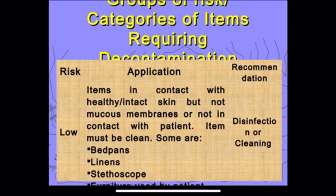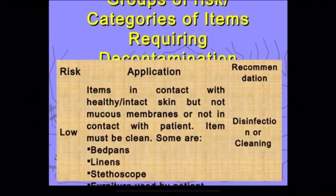Low risk items are those in contact with healthy intact skin, but not with the mucous membrane. Examples include bedpans, bed linen, and stethoscopes. For low risk items, we apply disinfection and cleaning — using chemical disinfectants and cleaning procedures.